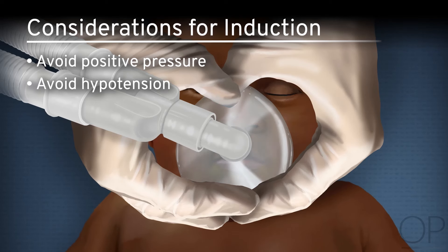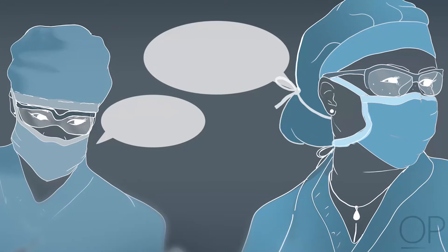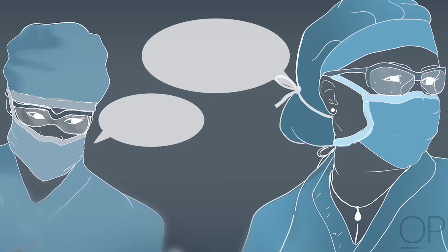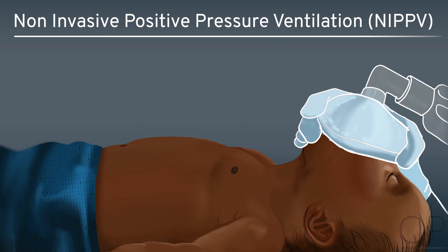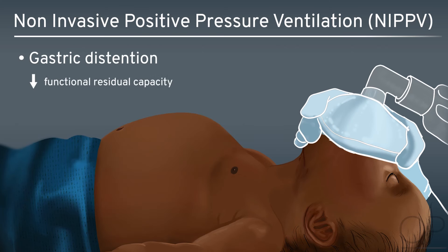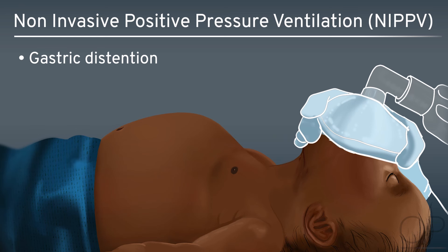Ideally, induction should avoid positive pressure and be gradual enough to avoid hypotension. The limited pulmonary blood flow and the significant right-to-left shunt in patients with Tetralogy of Fallot will only allow for short periods of apnea despite preoxygenation and oxygen insufflation techniques. Close communication with the proceduralist is important to optimize the level of anesthesia and prevent acidosis and hypoxia. Due to the limited pulmonary blood flow and right-to-left shunting bypassing the pulmonary circulation, the anesthetic uptake is slow, and a prolonged induction and excitation period should be expected.